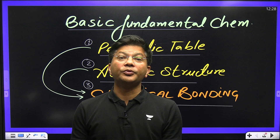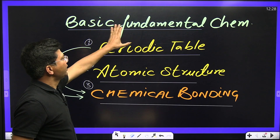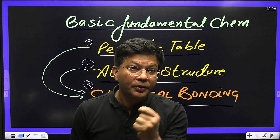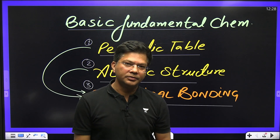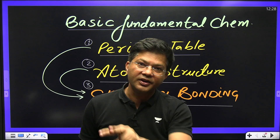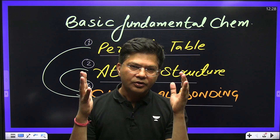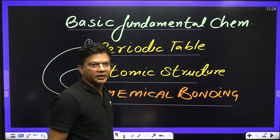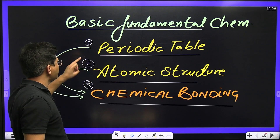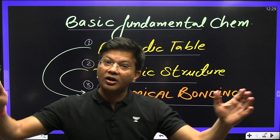Definitely, they are going to give you more than 160 plus marks. Let's see — basic fundamental chemistry: the periodic table. You should have very good knowledge of the periodic table, and along with that, atomic structure. These two chapters you should have very good command on, and after going through these two chapters in detail, you should know chemical bonding. Chemical bonding is the base — these three chapters, one, two, three out of seven, really hold a lot of weight.